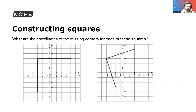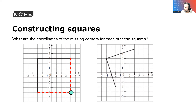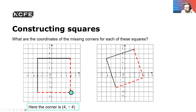Constructing squares — what are the coordinates for the missing corners of these squares? So we're going to come down, along the corridor and down. We need to know this corner here — so that's four minus four, because we're going to go there and there. And then for this square we're going to need to know this one, and therefore the corner here is four minus one.